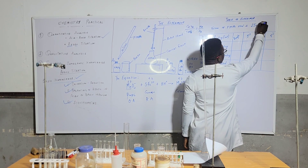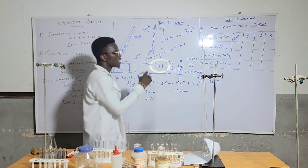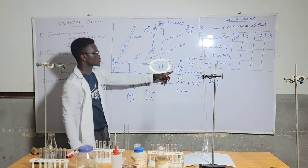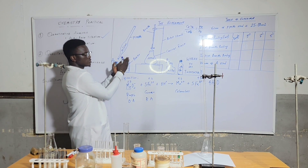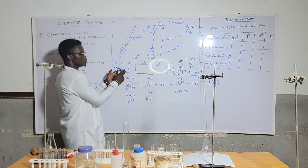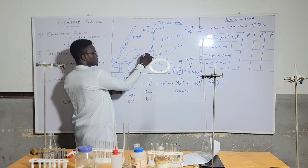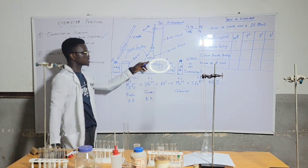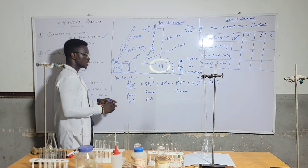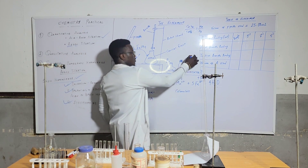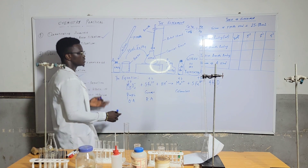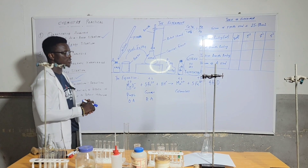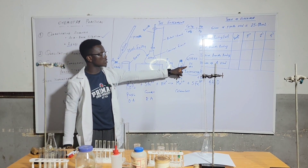Ask your teacher and check your table to confirm what pipette you are using. If you are using 25 mL pipettes, you write 'volume of pipette used = 25.00 mL.' That's what I'll be taking for my own experiment. The FeSO4 will have been in the beaker so it's easy to transfer — you pipette 25 mL of FeSO4 and transfer it into the conical flask.